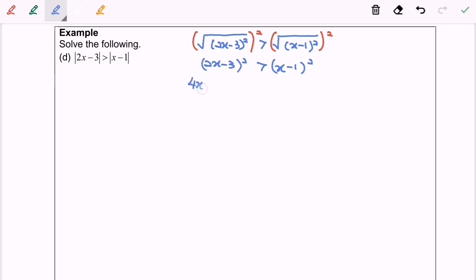So 4x square minus 12x plus 9 greater than x square minus 2x plus 1. Rearrange and simplify, we will have 3x square minus 10x plus 8 greater than 0.